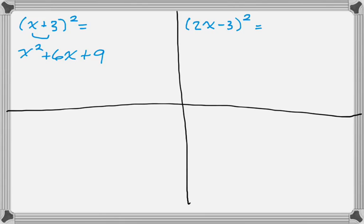Another problem would be the quantity 2x minus 3 squared. This is actually no different. It's just 2x plus negative 3, and then the whole quantity squared. So square the first gives us 4x squared. Multiply them together gives me negative 6x, but then I double it, so negative 12x. And then square the last, so that'll be plus 9.